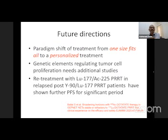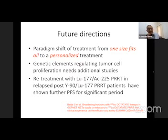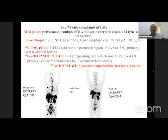The future direction is a paradigm shift from a one-size-fits-all to a personalized treatment approach. We need to understand genetic elements regulating tumor cell proliferation, which requires additional studies. Retreatment with lutetium-177 or actinium-225 PRRT in relapsed post-yttrium or post-lutetium patients is being explored. Dr. Bal from AIIMS New Delhi has demonstrated remarkable efficacy of actinium-225 PRRT in patients with stable or progressive disease. We have also started treating patients with actinium in our setup.